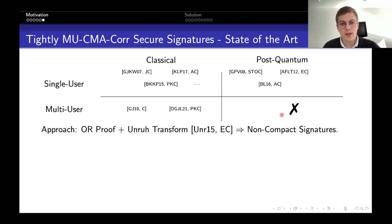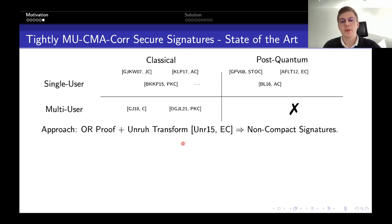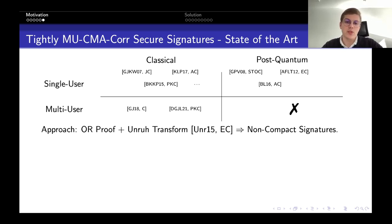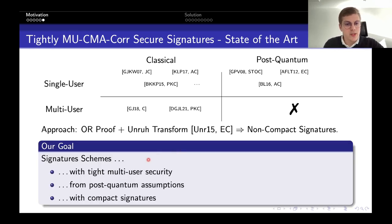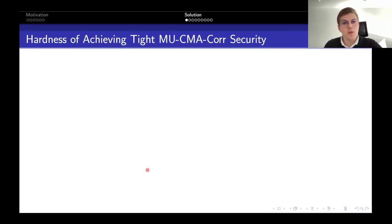There is a folklore approach using an OR proof and some online-extractable NIZK such as the UNRUH transform. But that leads to non-compact signatures where the number of group elements or vectors in one signature grows linearly with the security parameter, which is not efficient. So our goal is a signature scheme with tight multi-user security from a post-quantum assumption such as lattice-based assumptions, with compact signatures.